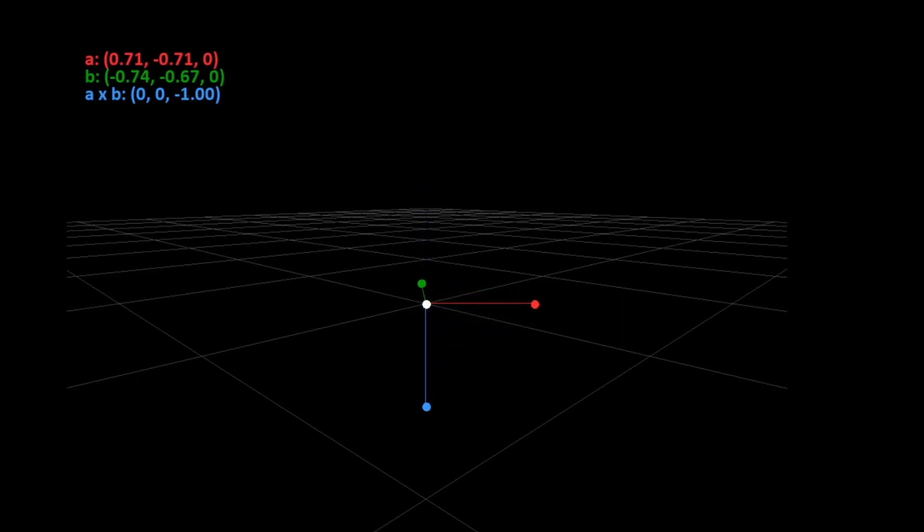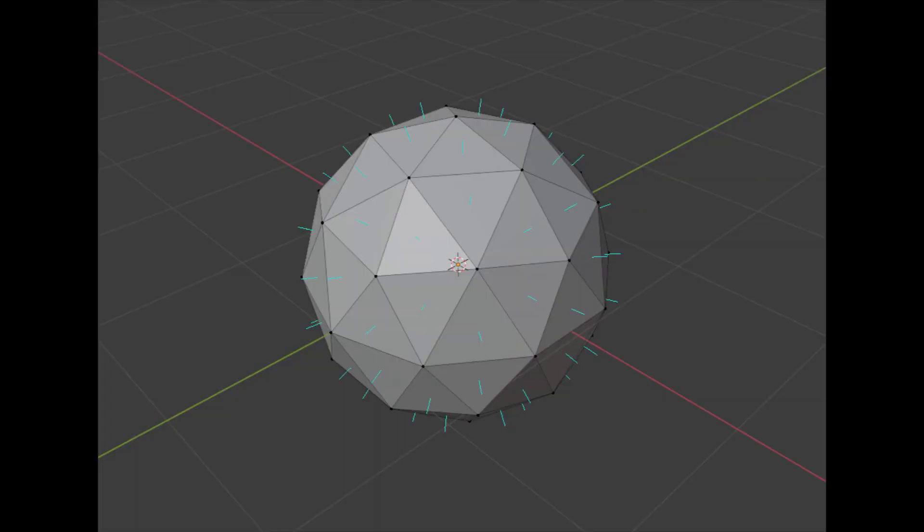When it comes to making video games, the main reason that one would usually want to do this is because they want to be able to find the surface normal of a triangle or maybe of some other shape.